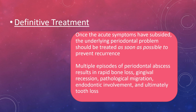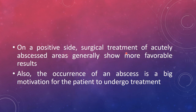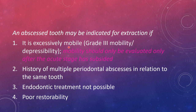Once acute symptoms have subsided, the underlying periodontal problem should be treated as soon as possible to prevent recurrence. Multiple episodes of periodontal abscess result in rapid bone loss, gingival recession, pathologic migration, endodontic involvement, and ultimately tooth loss. Surgical treatment of acutely abscessed areas generally shows favorable results, and an abscess episode can be a strong motivation for the patient to undergo treatment. Extraction is indicated if the tooth is excessively mobile with questionable prognosis, has a history of multiple abscesses, is not amenable to endodontic treatment, or has poor restorability.